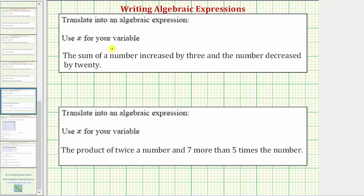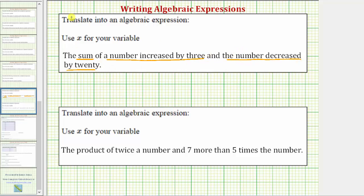The first thing to recognize is that we have a sum, which means we'll be adding. The two things we add are called addends. For this statement, the first addend is 'a number increased by three' and the second addend is 'the number decreased by twenty.'